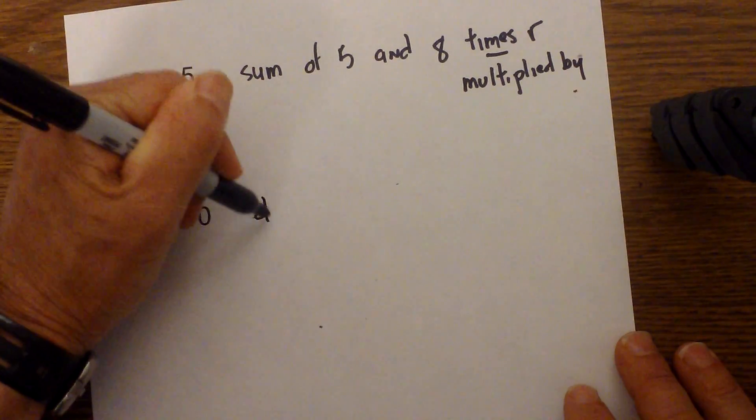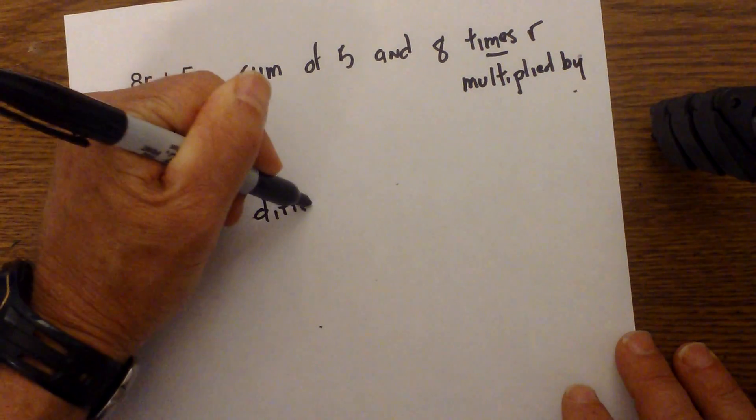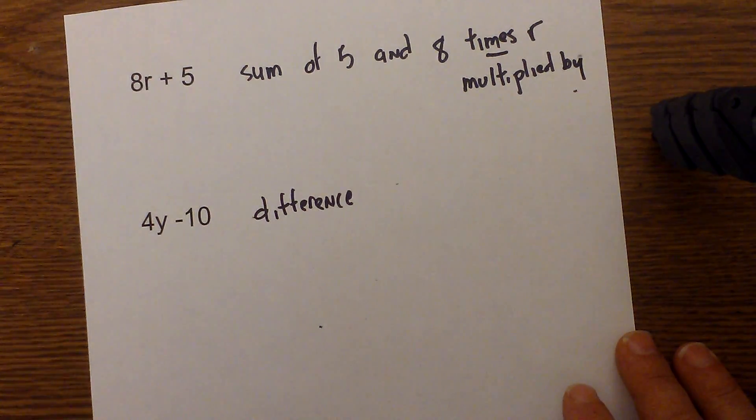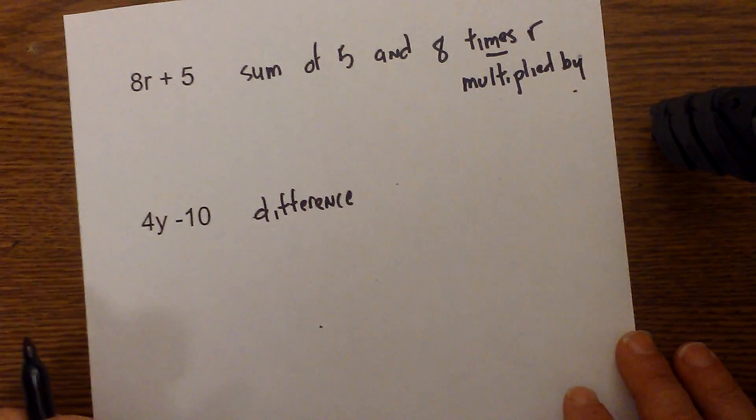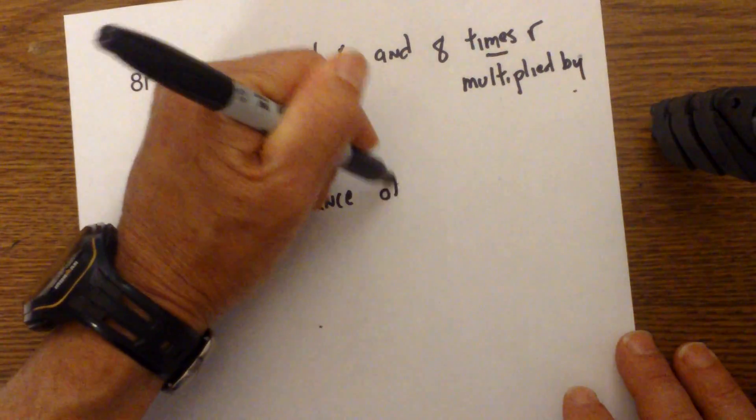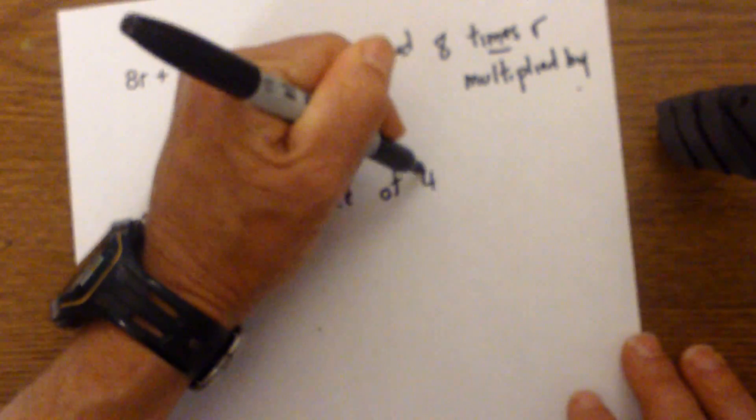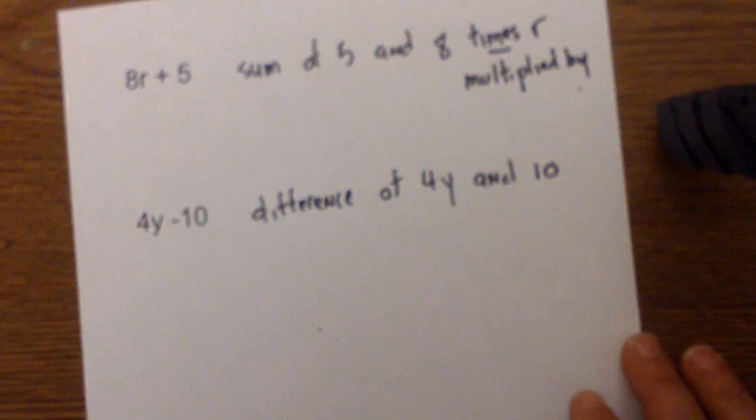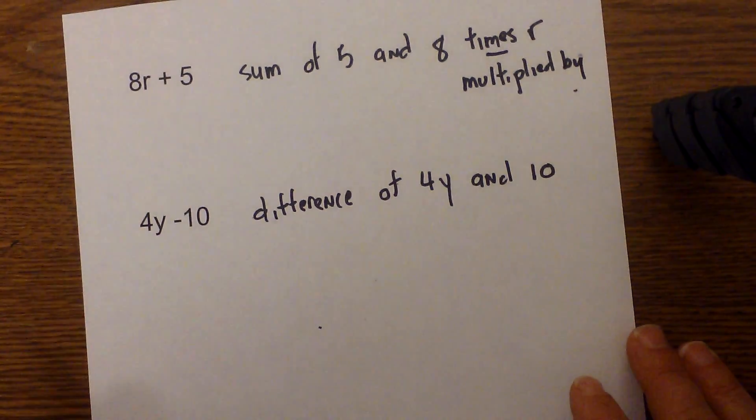And finally the last one. Subtraction. I'm going to use the word 'difference'. Again, on my chart I could use 'difference', I could use 'fewer than', but it's the difference of 4y and 10. That's how I can write that.